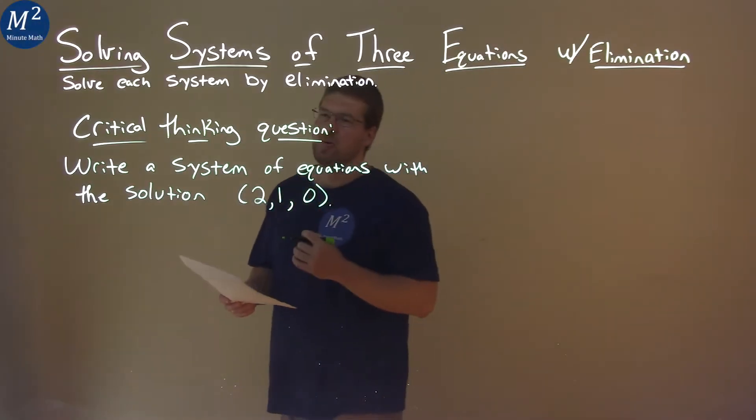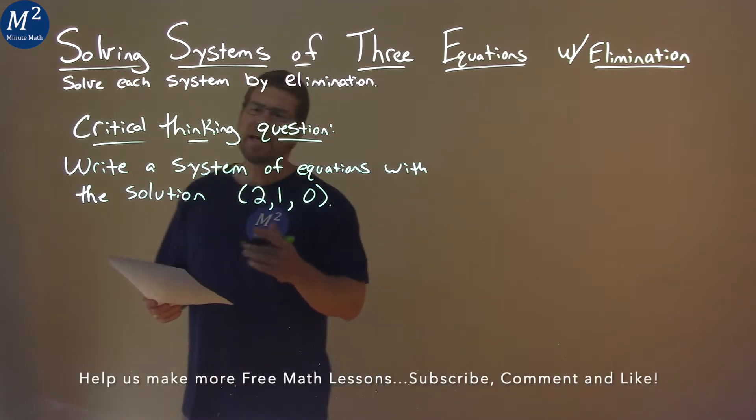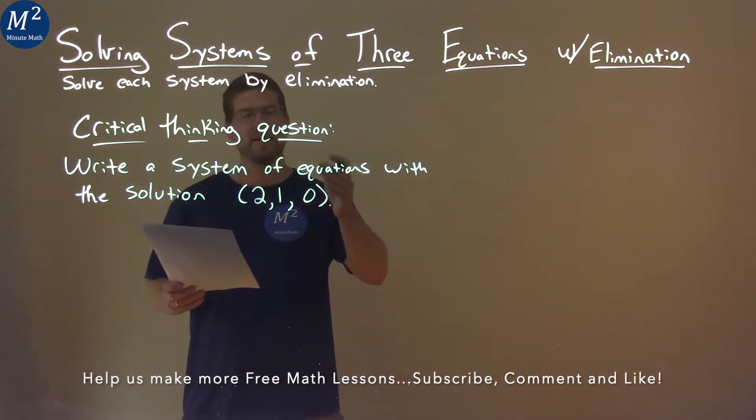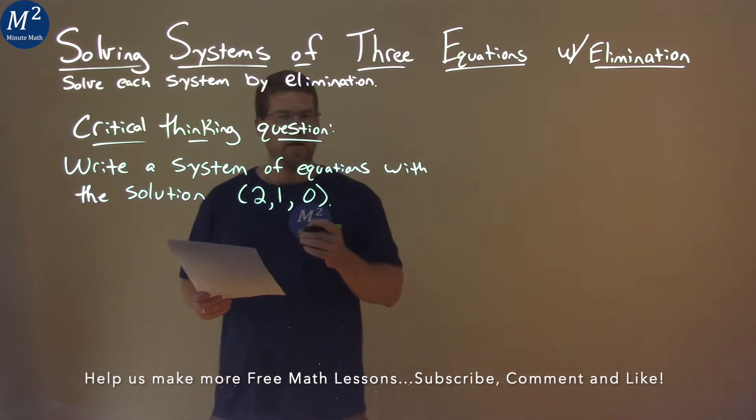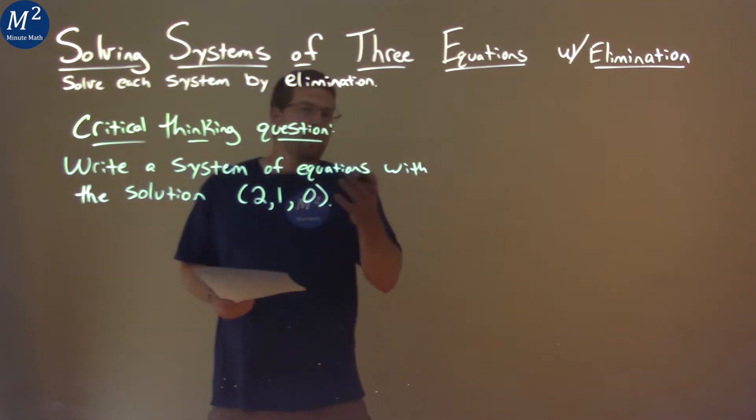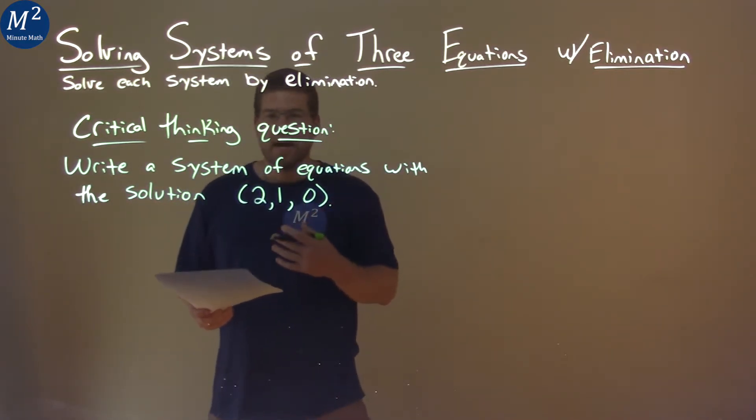We're given this critical thinking question here. Write a system of equations with the solution (2, 1, 0). There's actually many ways and many solutions to this answer, so you might come up with something a little different than what I have here.